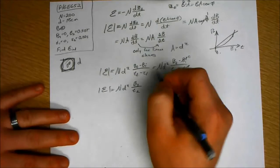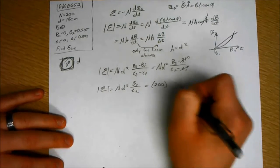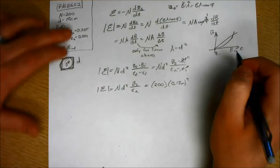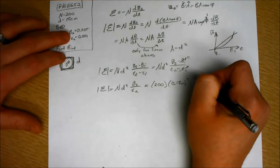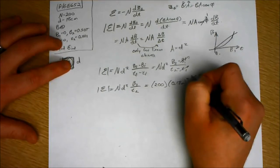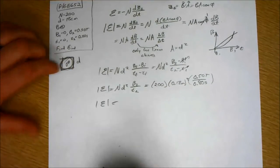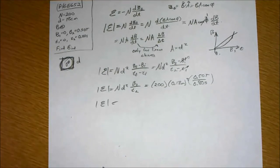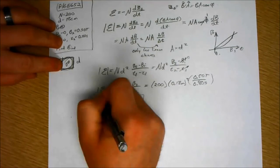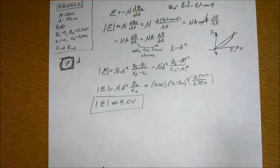And I guess we can put in the numbers. 200 times 0.18 meters squared times B2, which is 0.50 Tesla over 0.80 seconds. When we plug in all those numbers, you get 4.0 volts. Again, we're not talking about plus or minus volts because we don't know what the, we don't know, we don't have all these directions in mind. We know it's 4 volts one way or the other.